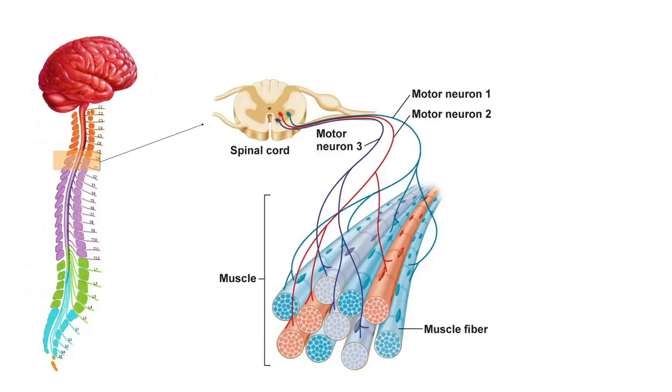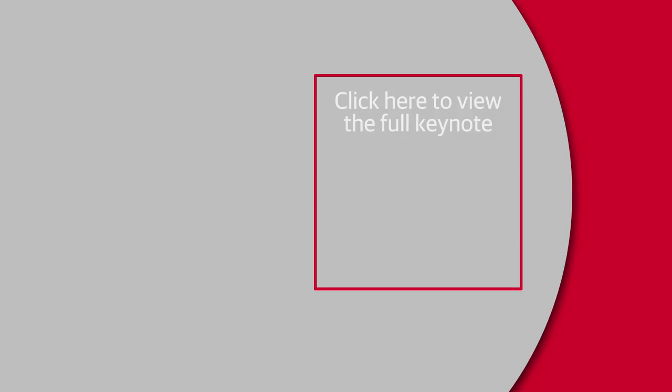With action potentials, we have the zeros and ones of the nervous system. There is no information more reduced than that. And from there, we're off to the races.